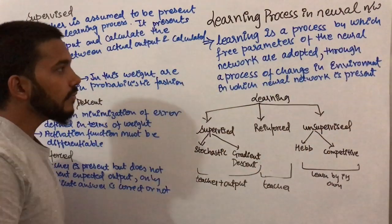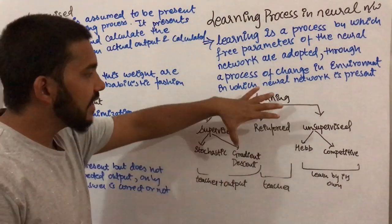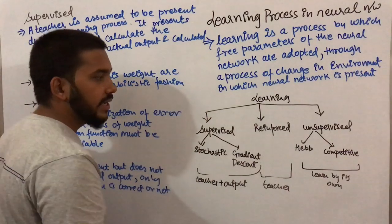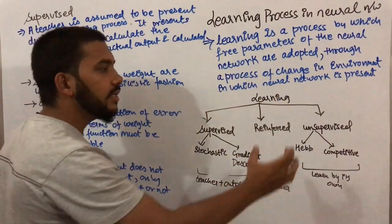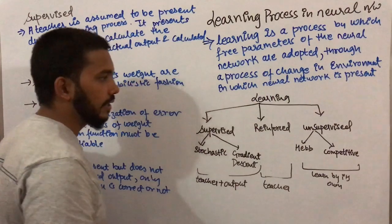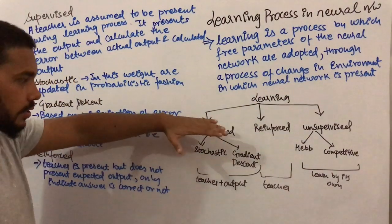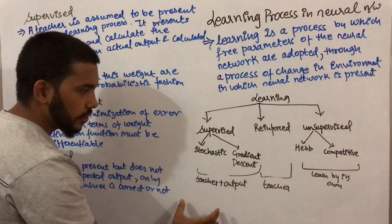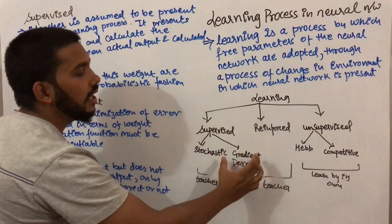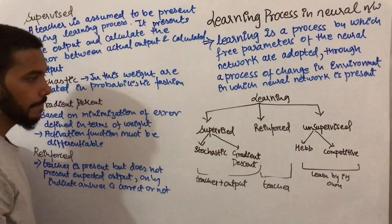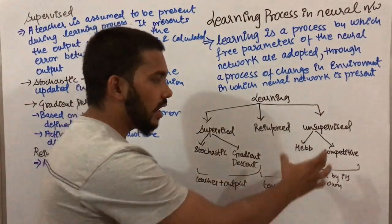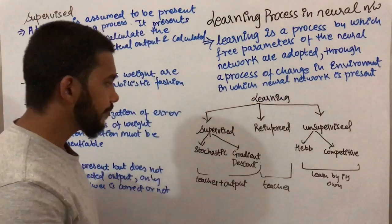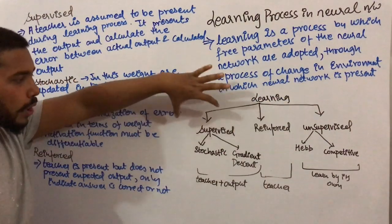In neural networks there are basically three types of learning: first is supervised learning, second is reinforced learning, and third is unsupervised learning. Supervised learning is further divided into two parts: stochastic and gradient descent. Unsupervised learning is divided into two parts: Hebbian and competitive.